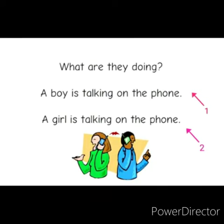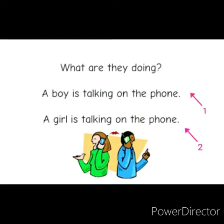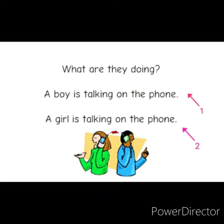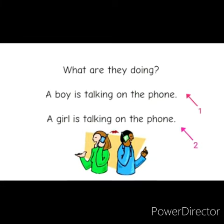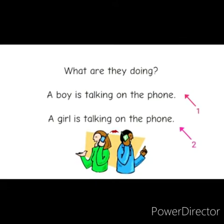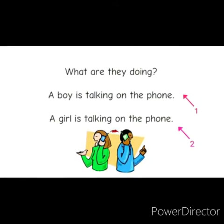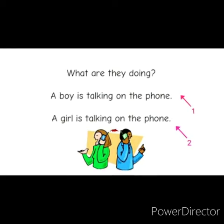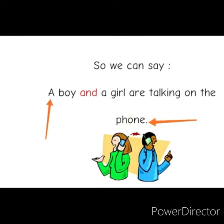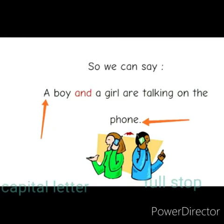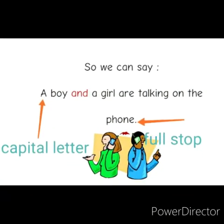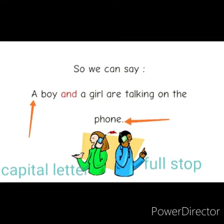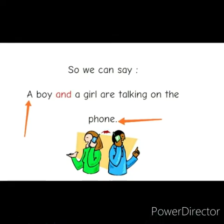What are they doing? A boy is talking on the phone, and a girl is talking on the phone. We have two sentences here, and both of them are doing the same action, so we can make it one. We can make the two sentences into one by using the joining word 'and': 'A boy and a girl are talking on the phone.' We can make two sentences into one simple sentence using the joining word 'and'.